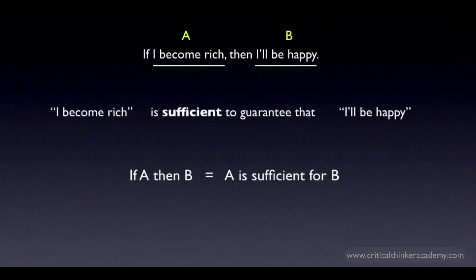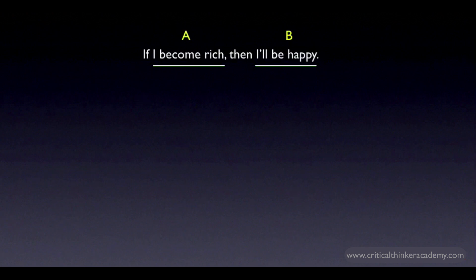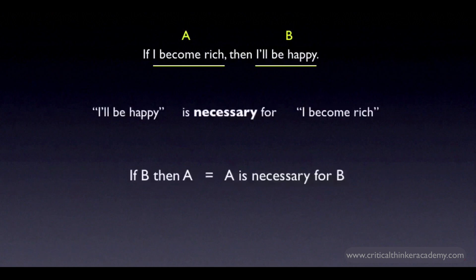So how do you interpret the language of necessity? Let's go back to our original claim: if I become rich, then I'll be happy. We can't say that A is necessary for B, but we can say that B is necessary for A. In other words, we can't say that my being rich is necessary for my happiness, but we can say that my happiness is a necessary consequence of my being rich — if I end up rich, then I'm necessarily happy. So relationships of necessity and relationships of sufficiency are converses of one another: if A is sufficient for B, then B is necessary for A.